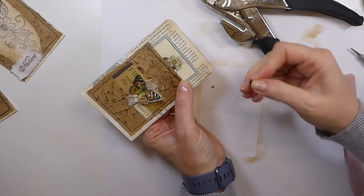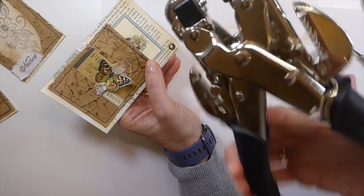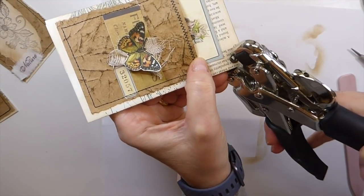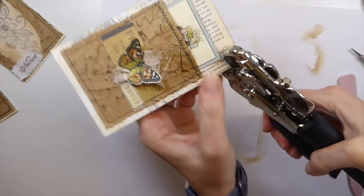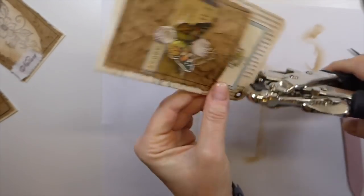Just in case I've had this question in the past, this is a crop-a-dial and you use it to set your eyelets. I know most of us know that but I have had a few ladies who are new to crafting who have asked me what is that and what does it do.